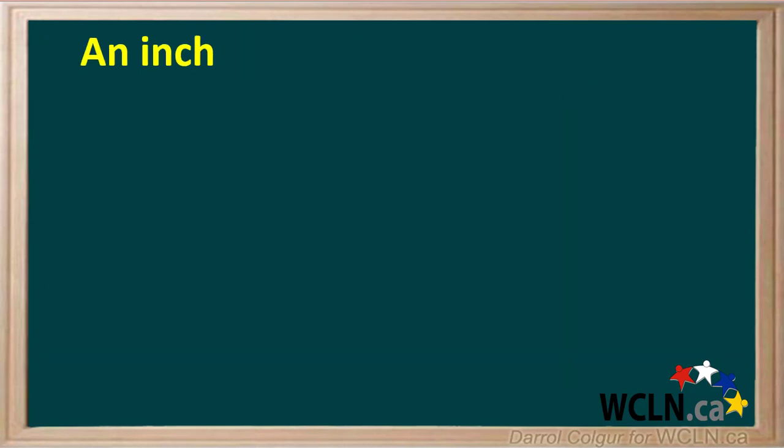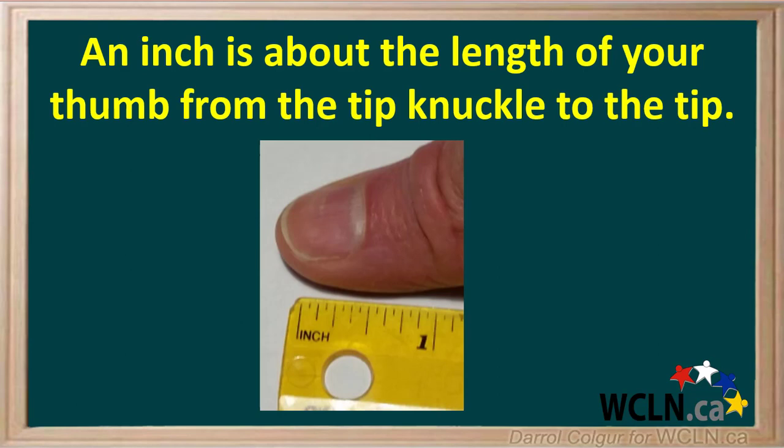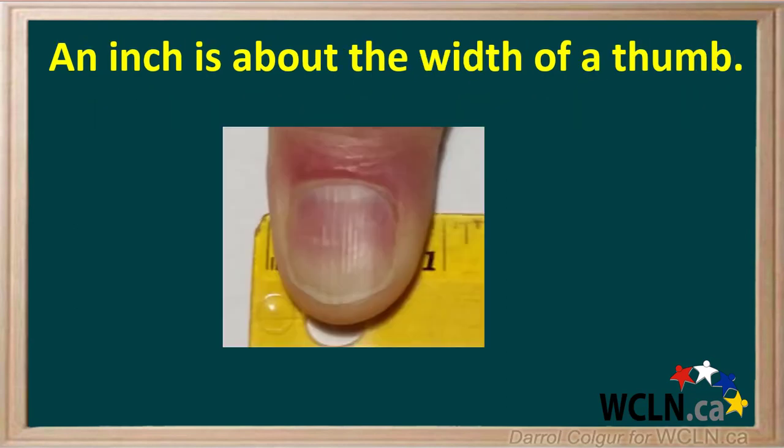So what about an inch? How can we estimate that? An inch is approximately the length of your thumb from the tip knuckle to the tip, as we can see in the picture here. Of course, everyone's thumb is different, so this is not a very precise definition, but it can give you a rough idea of what an inch is. An inch can also be thought of as the approximate width of your thumb.